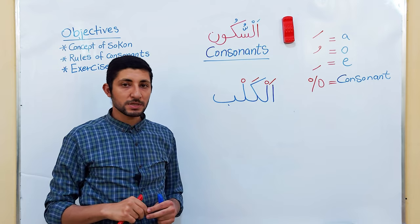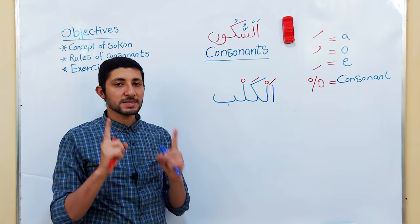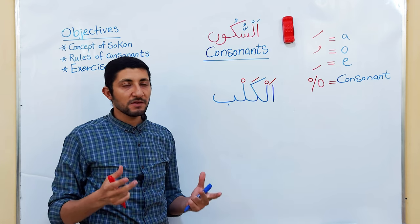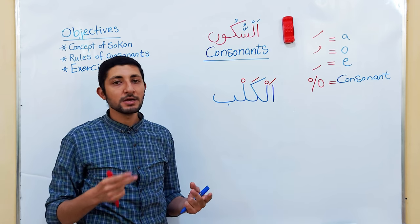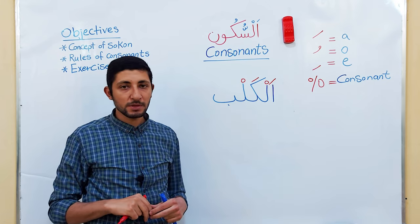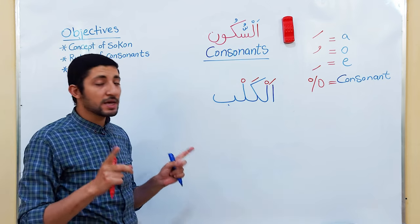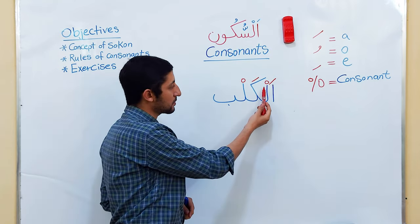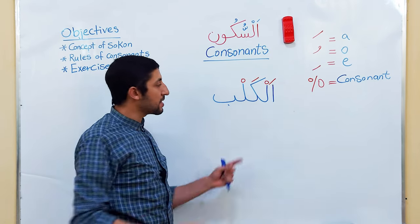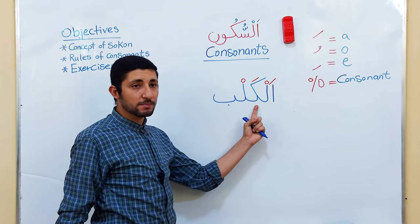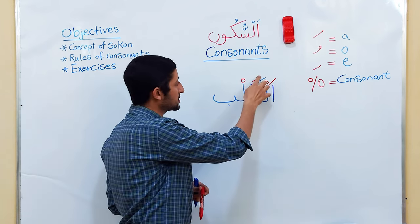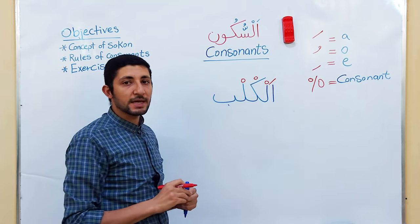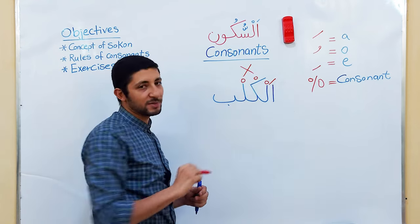The second rule of consonants: two consonant sounds cannot be next to each other in the same word. If a word contains two consonant sounds, those two cannot be adjacent. As you can see in the example, there is a vowel in between them. Something like two consecutive consonant sounds in a row cannot happen in Arabic.